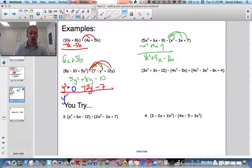So I have a positive y³ plus 5y². 8 minus 12 is negative 4y. 7 negative 10 minus 7 is negative 17.